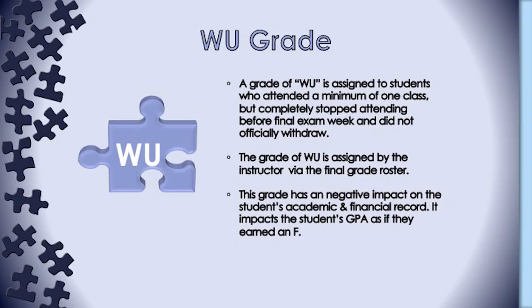The grade of WU has specific conditions in which a student is assigned this grade. The first condition is the student must have attended class at least once but completely stopped attending before final exam week. The second condition is the student did not officially withdraw during the withdrawal period in CUNY First — in other words, does not have a grade of W. If these two conditions are not met, a WU grade may not be the appropriate grade to assign, and we recommend you contact your respective department for guidance on the appropriate grade.